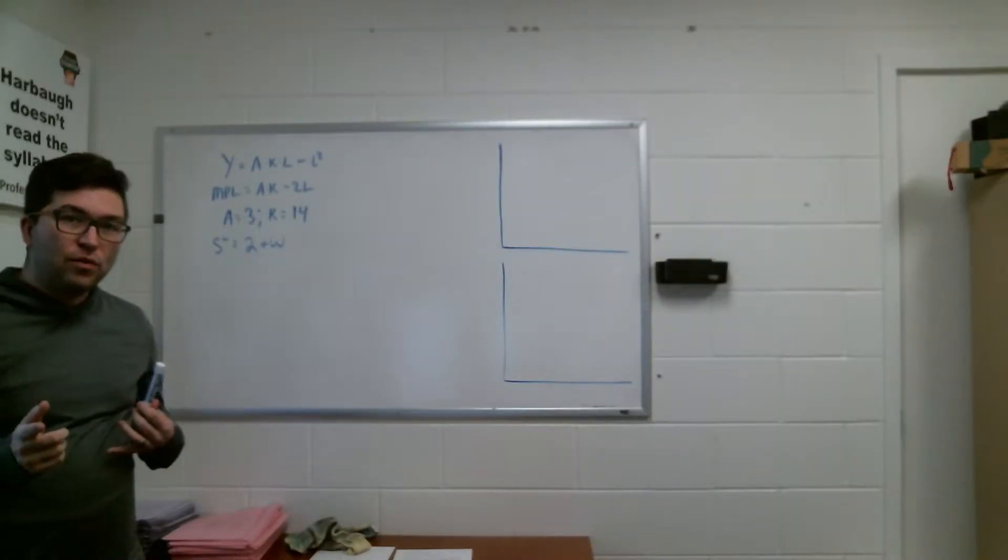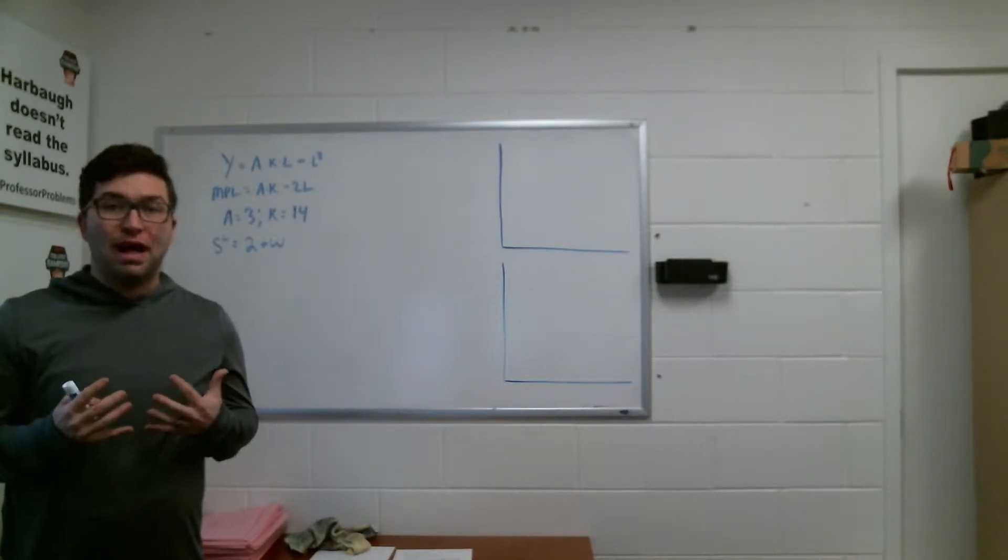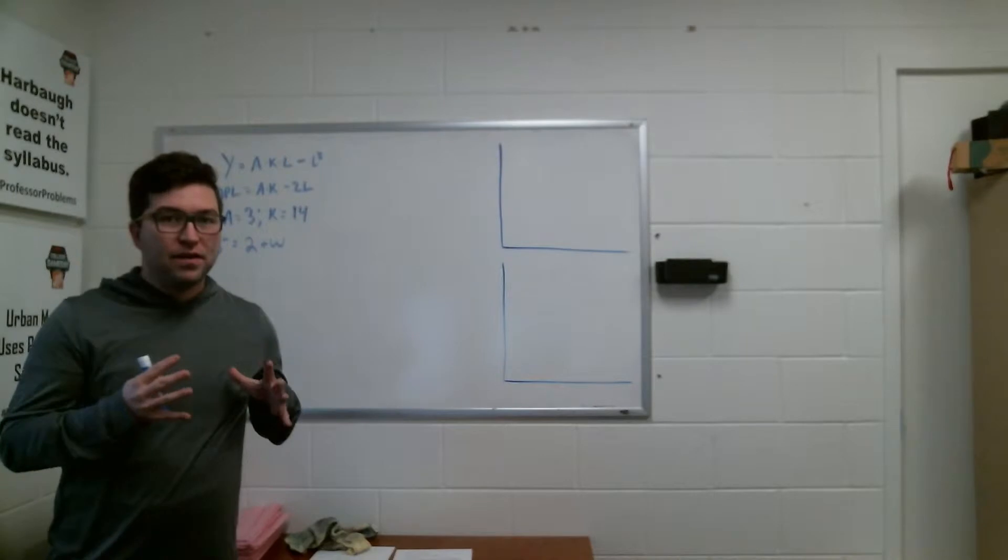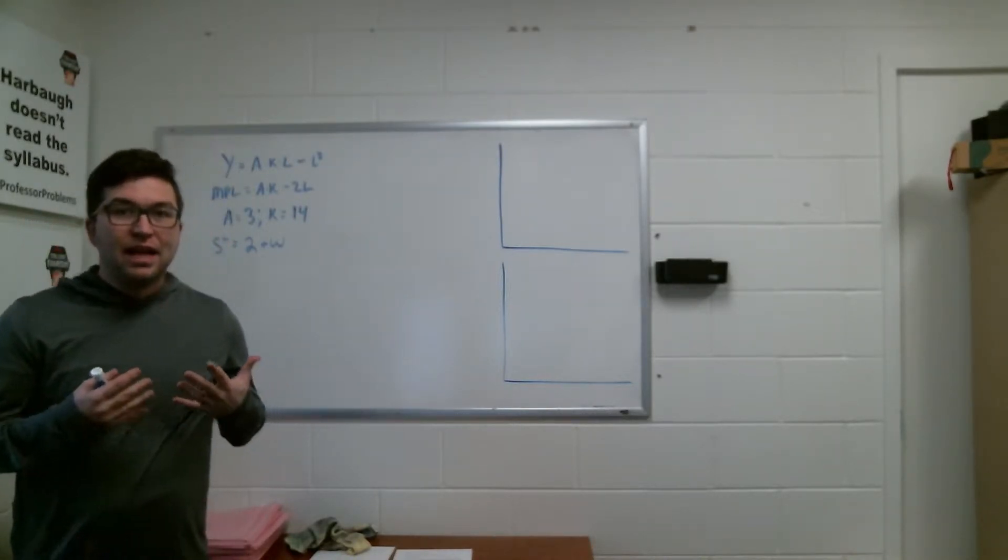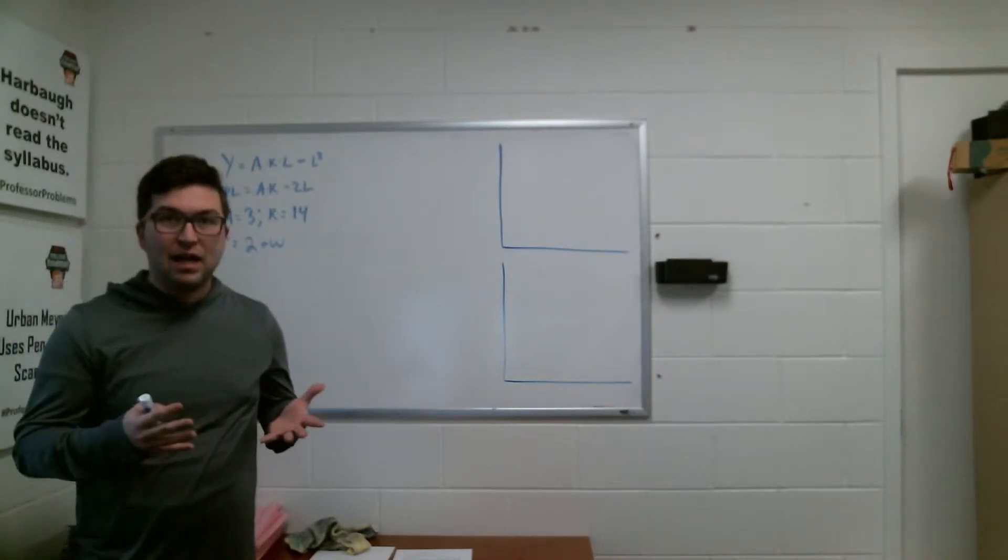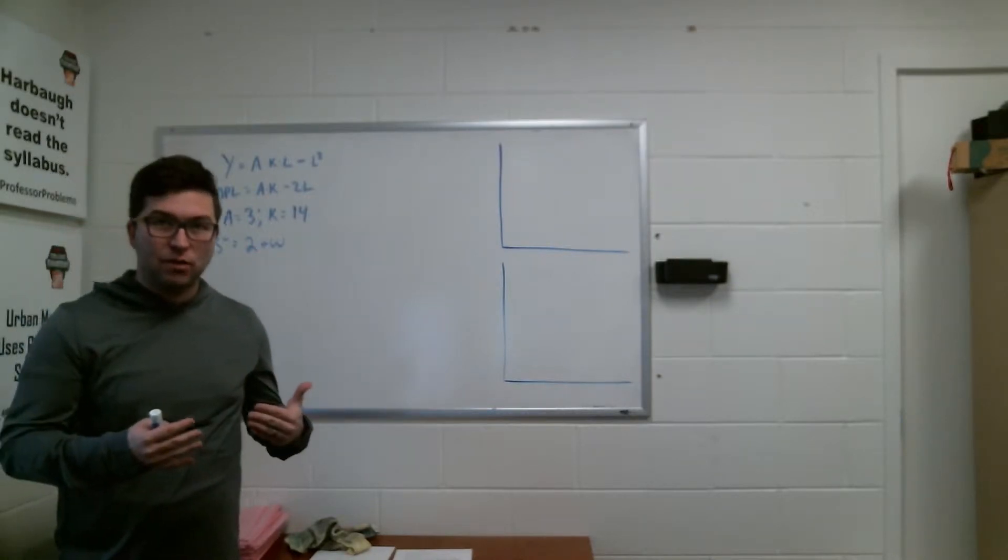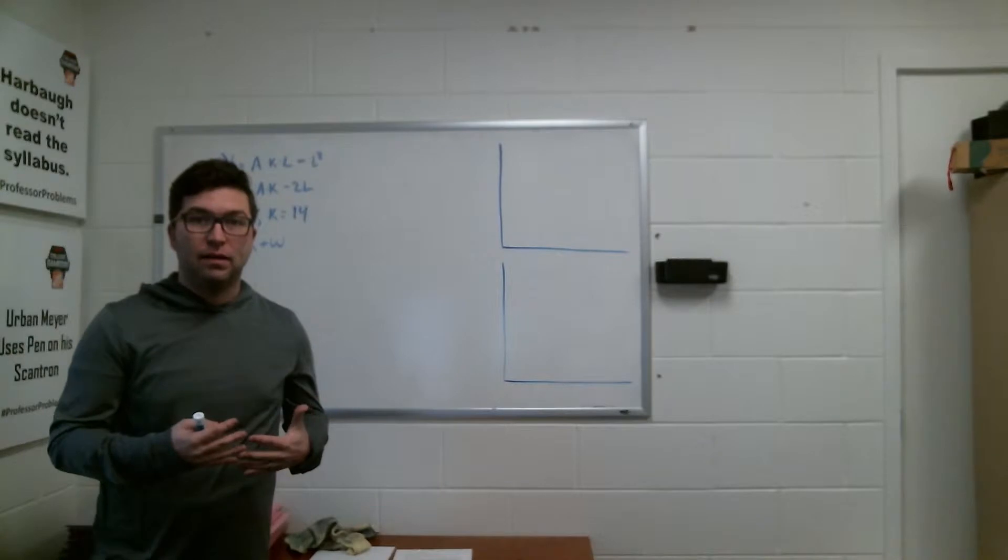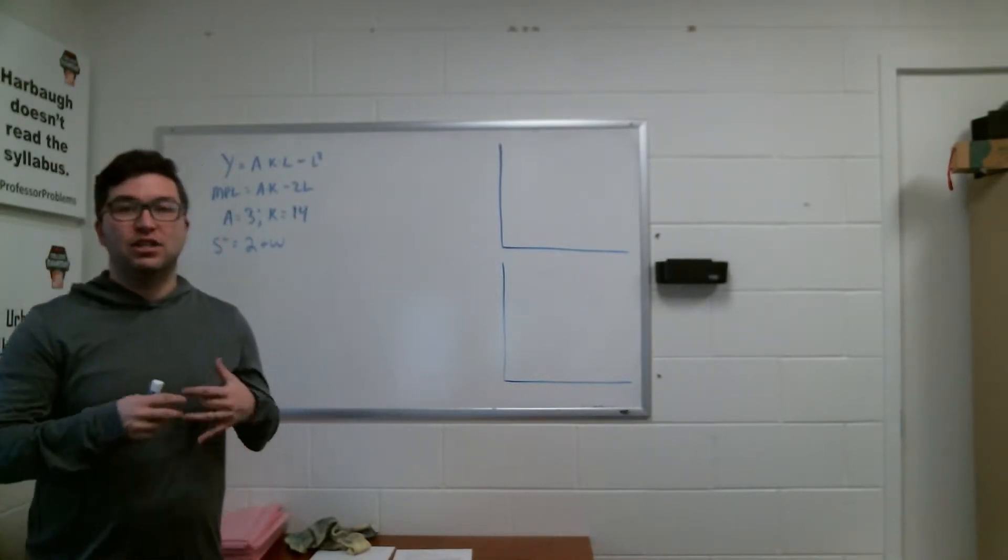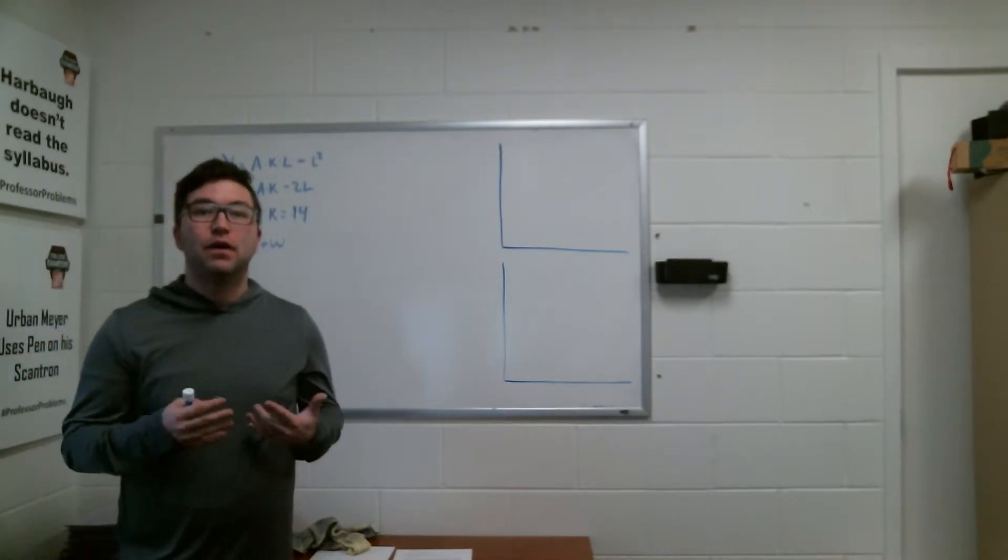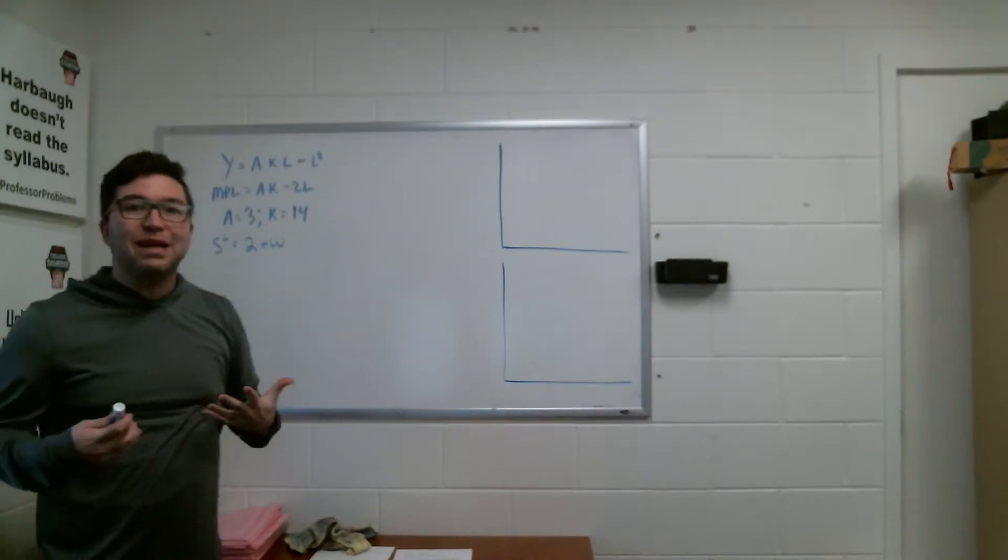The way we get started with this type of problem is we first want to start with the labor market. We know that we're going to have a labor demand and a labor supply, and in this very simple classical model, we're going to assume that the wages are set in a supply equals demand type market, meaning that wages are completely flexible, and we're going to get to a wage that will clear the market, making the quantity of labor demanded equal to the quantity labor supplied. We're not going to see a shortage, nor will we see a surplus of labor. We have supply of labor. The next thing is, where's my demand for labor?